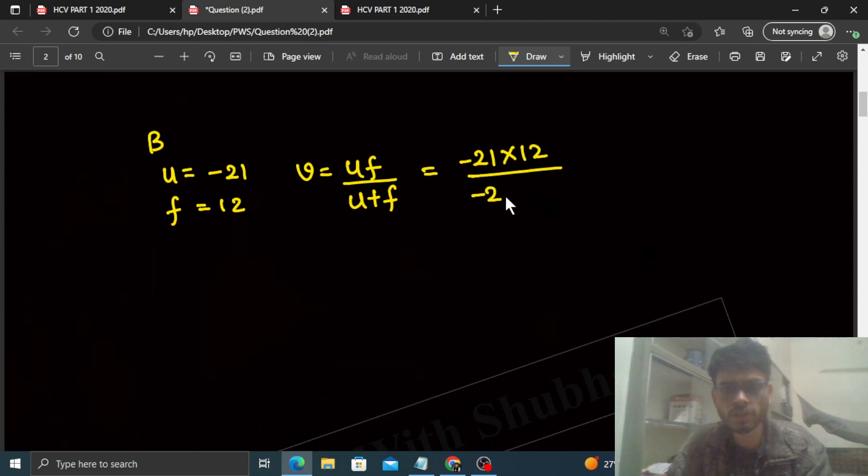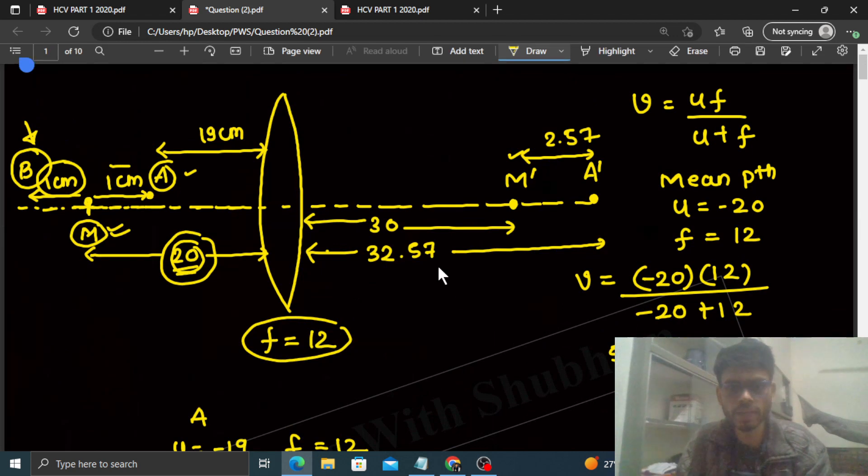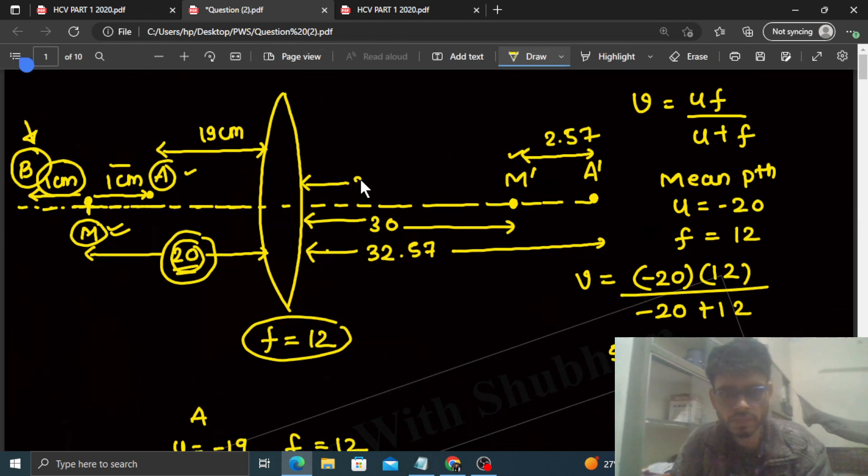So v will be basically uf divided by u plus f. Put the values: minus 21 into 12 divided by minus 21 plus 12. So how much will it be? Minus 21 into 12 divided by minus 9. So minus and minus cancel. Divide by 3: 3 times, and this 7 times, divide by 3, this becomes 4 times. So that is basically 28. So the image of B will form at 28. So from here we go to 28, here, and we get B dash. So you can see the distance between B dash and M, this distance - this is 28 and this is 30, so this distance will be 2.